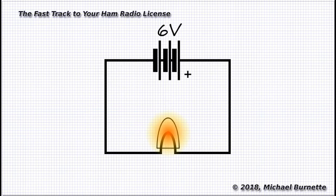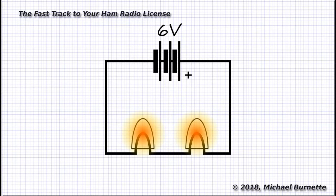What if we put two identical lamps in series? Kirchhoff's law tells us the voltage drop across the circuit still has to be 6 volts. So now, each of those lamps has a voltage drop of 3 volts.